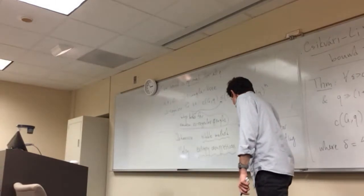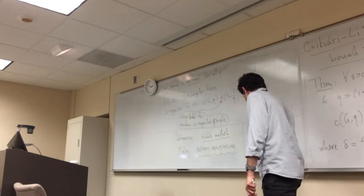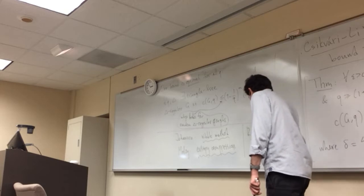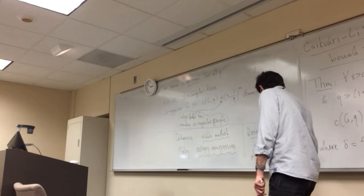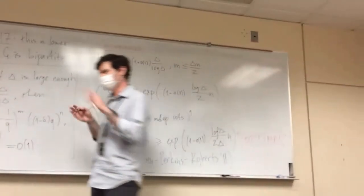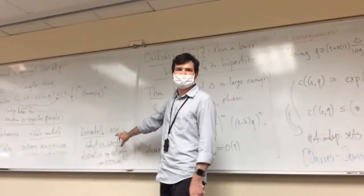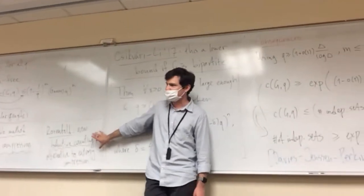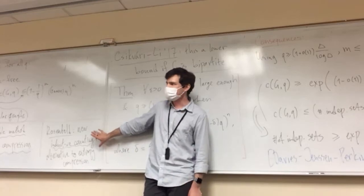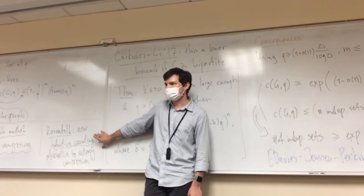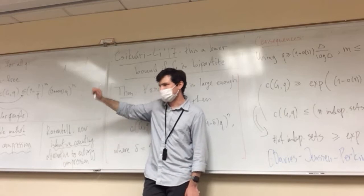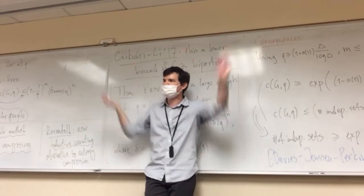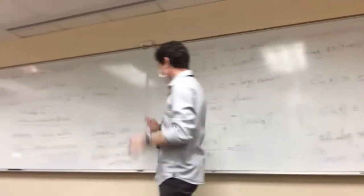There has been a recent development: Rosenfeld came up in 2020 with a new counting inductive counting technique, which serves as an alternative to entropy compression. Entropy compression was a somewhat bulky technique to use; this is a very elementary method that recovers pretty much all of the same results and sometimes gives better results. One byproduct is that it not only proves existence but actually gives a lower bound on how many of these things there are — and that's what we're going to do, applying this idea to the question of coloring triangle-free graphs.